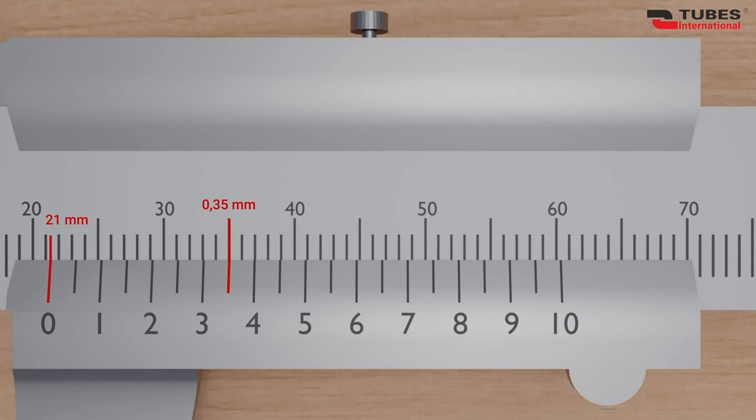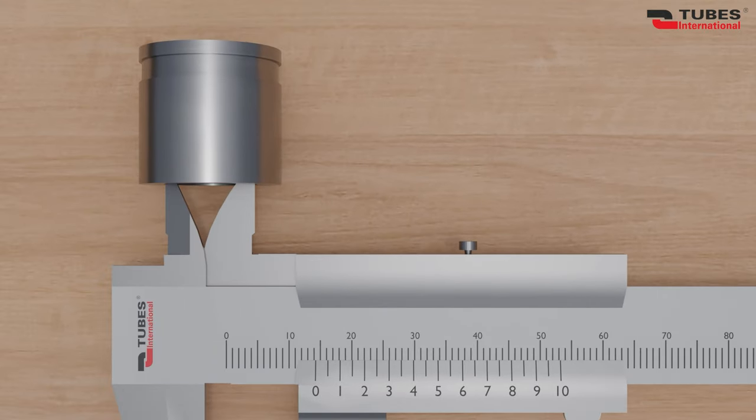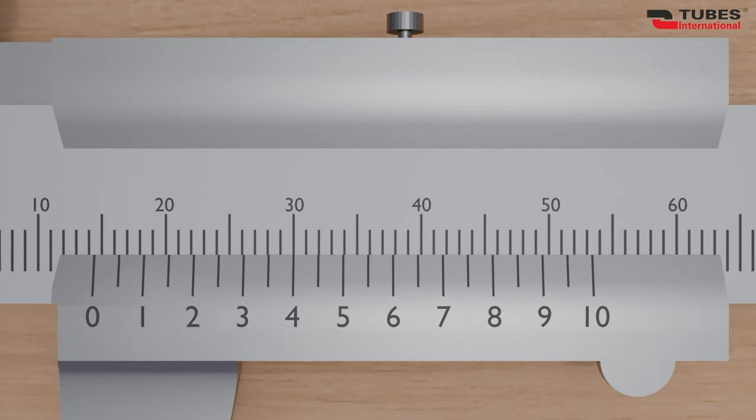Measuring internal dimensions, such as the diameter of a hole, is similar. This time we use the internal jaws of the caliper. Insert the jaws into the hole, and then read the measurement just like before. In this case, we see that the internal diameter is 14.4 millimeters.